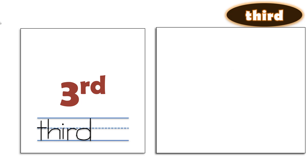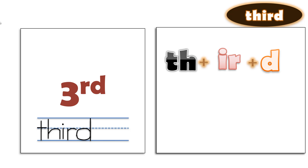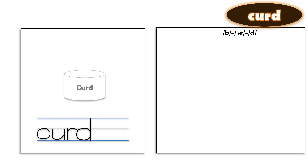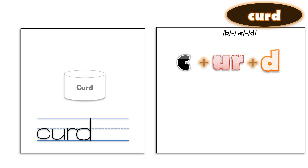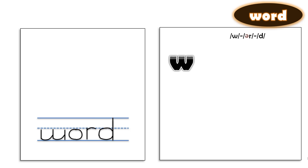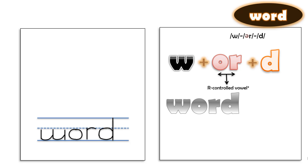Thud — TH-UD-ER — Thunder. Curd — K-ERD — Curd. Word — W-ERD — Word.